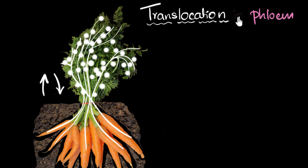So translocation happens inside the phloem. Food gets transferred in phloem. But how? Let's see.